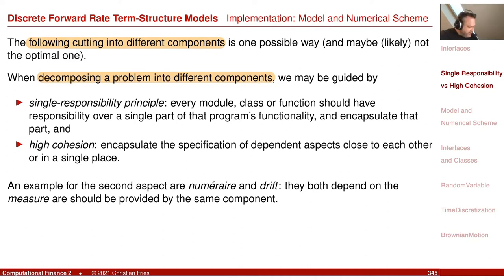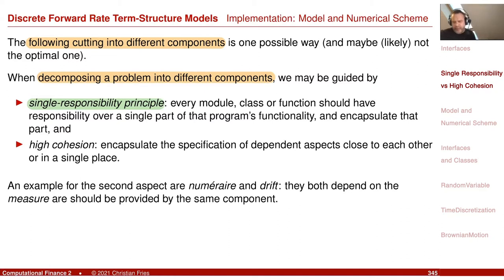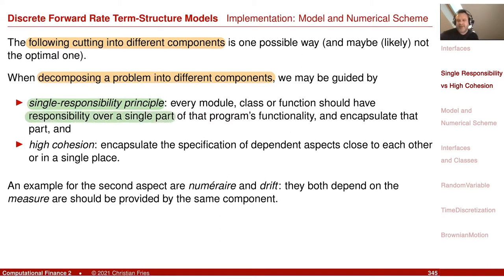There is the so-called single responsibility principle — a technical term in computer programming you can look up. It means that every module, every class, or every function we implement should have a single responsibility. You shouldn't have a big thing that does everything, because then if you want to exchange a part, you have to exchange that entire big thing. I want small parts, each with a single responsibility over one aspect. Generation of random numbers is a completely different aspect from performing the Euler discretization.